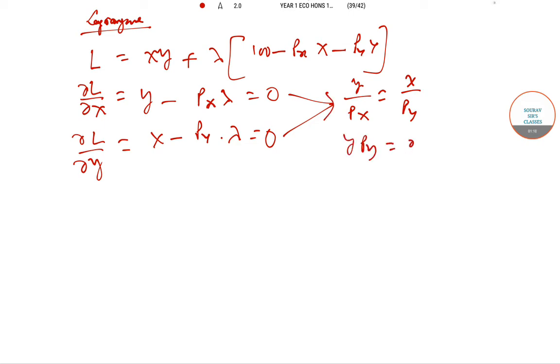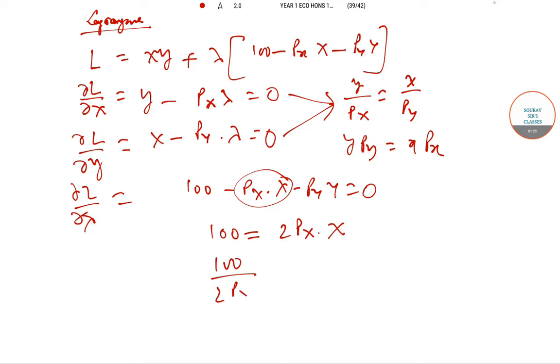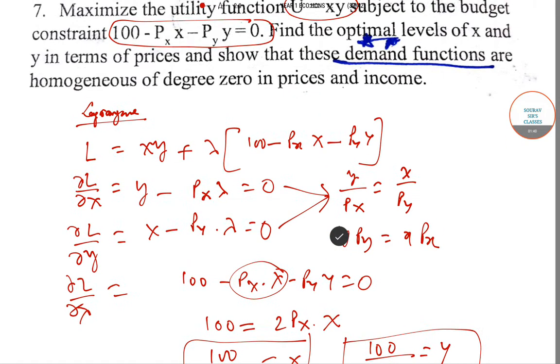So Y·PY equals X·PX directly. The third equation gives us ∂L/∂lambda gives us 100 minus PX·X minus PY·Y equals 0. So you just replace PX·X with PY·Y. So 100 equals 2PX·X. So 100 divided by 2PX is X, and 100 divided by 2PY is Y. So this is the two-equation format for the demand for X and Y.